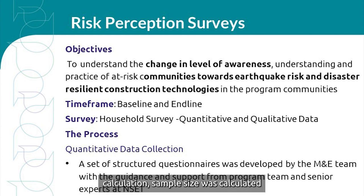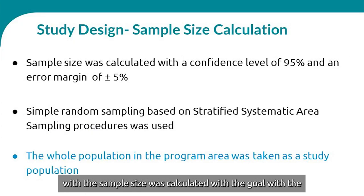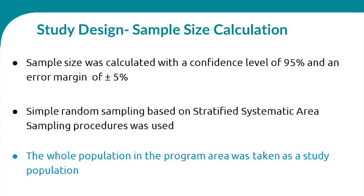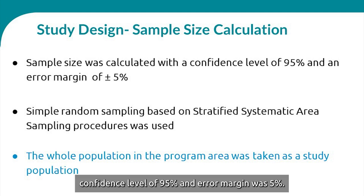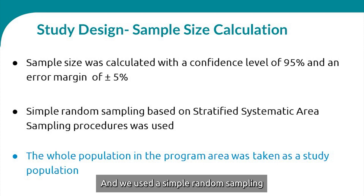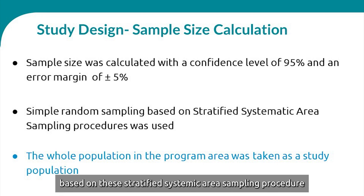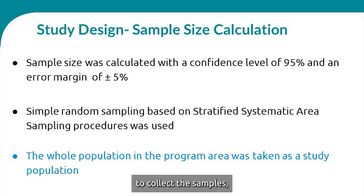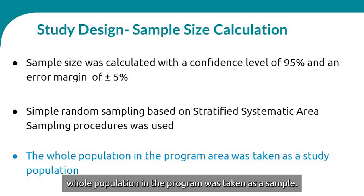Sample size was calculated with a confidence level of 95% and an error margin of 5%. We used simple random sampling based on a stratified systematic area sampling procedure to collect samples, and the whole population in the program area was taken as the sampling frame.